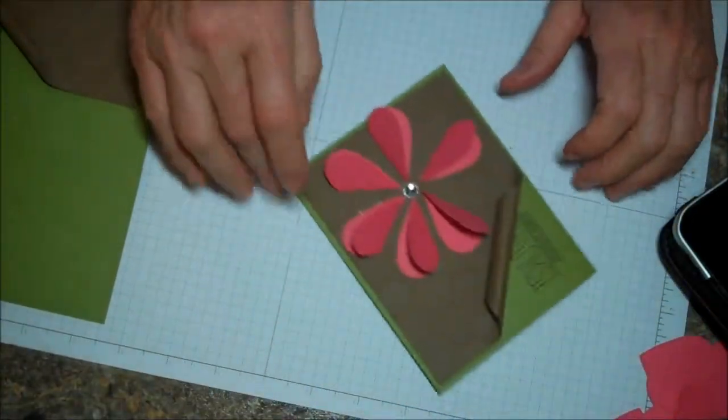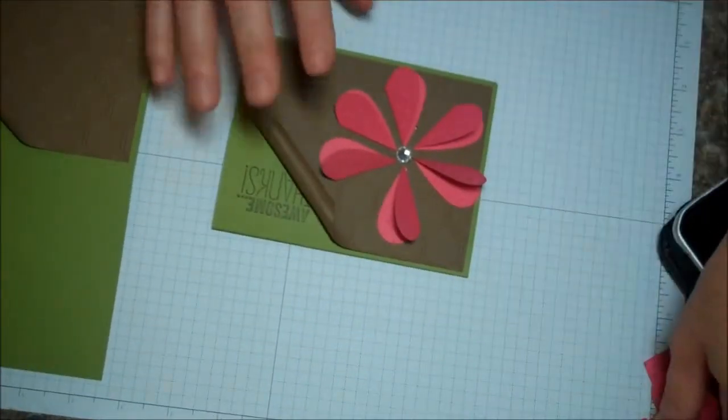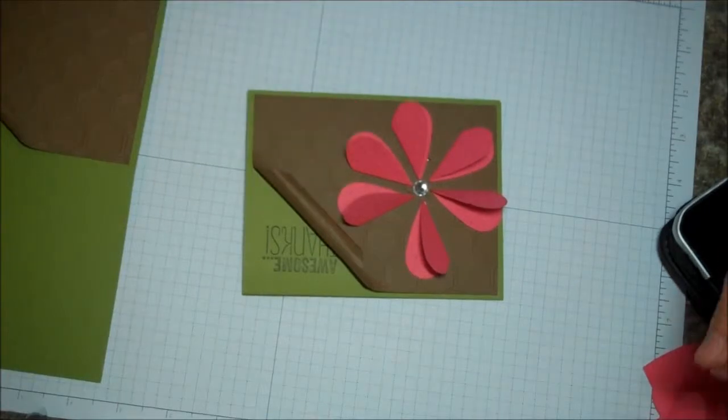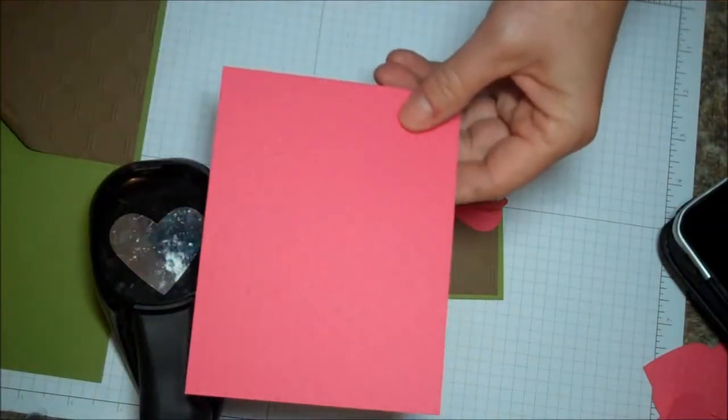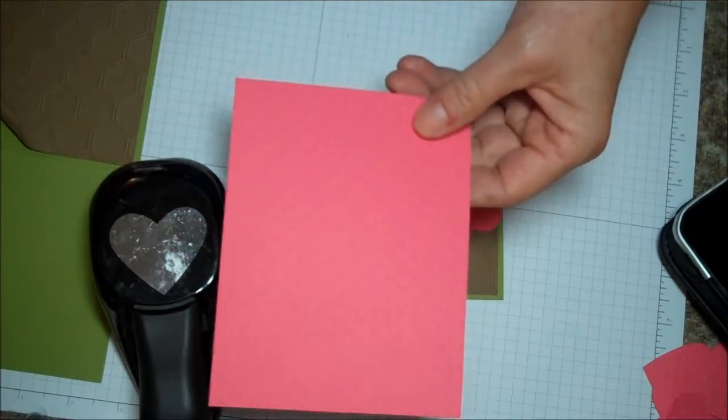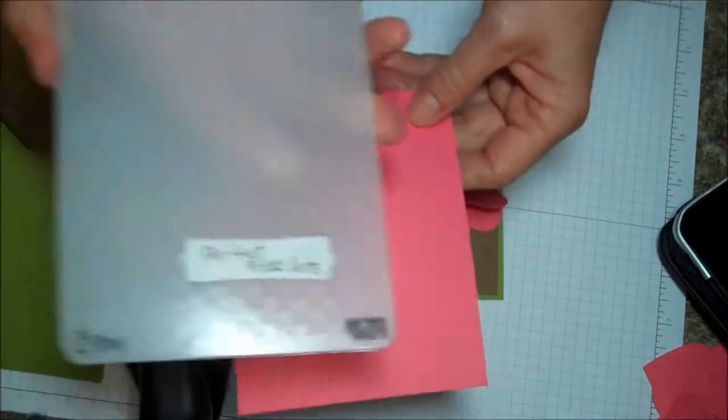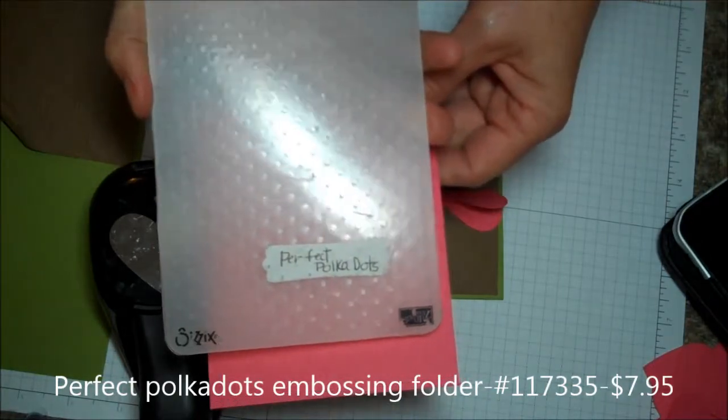Now, how do I get these hearts? What I did with these hearts, I'm sorry, with the flower, is I took our Full Heart Punch, and then I ran a piece of Strawberry Slush through the Big Shot using the Perfect Polka Dots Embossing Folder.